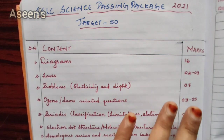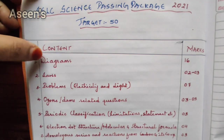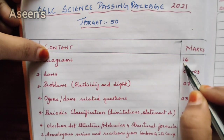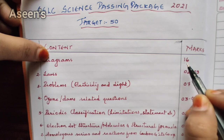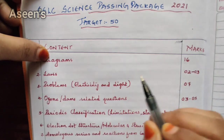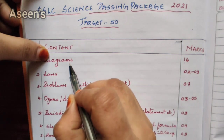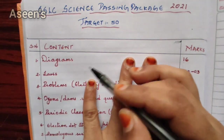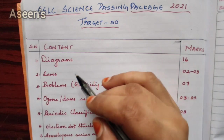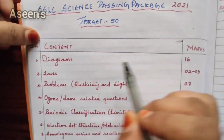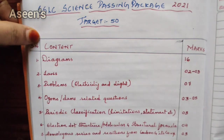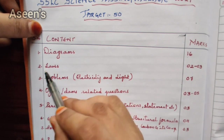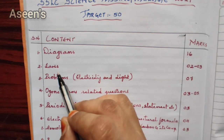Let's get started. The first and foremost topic here is diagrams. This time diagrams have got a total of 16 marks. If you remember last year's pattern, it was 12 plus 4 — that is 12 marks for diagrams and 4 marks for diagram-related questions. But this time you don't have that; you are going to get a total of 16 marks for diagrams only, which is actually an advantage for students.